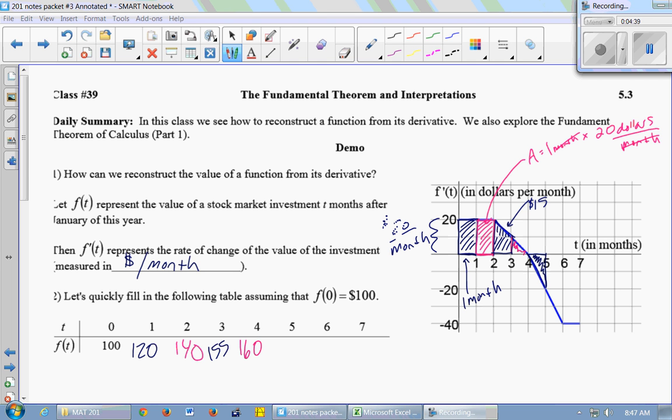How do you know that it went down? It's below the x-axis. So this says that the value of my investment was decreasing because the derivative is negative. This area is under the x-axis, so it's negative. So my value decreases by 10. I'm at $150 now.